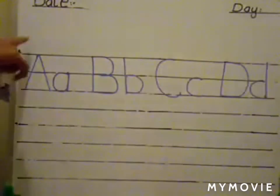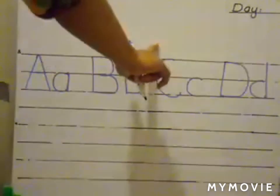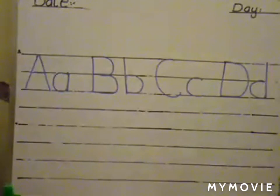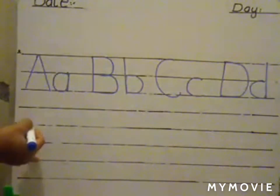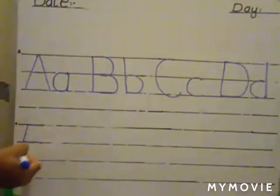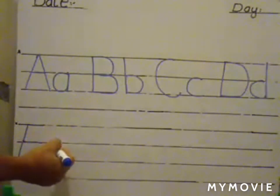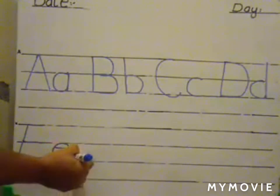What comes after C? D. Uppercase D. Lowercase D. A, B, C, D. What comes after D? E. Very good. Lowercase E. Good.